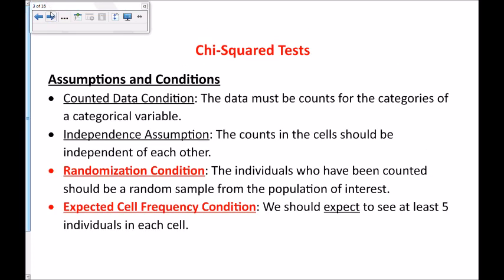Let's talk about some assumptions and conditions for chi-squared tests. These apply to the goodness-of-fit test as well as the other chi-squared tests. There are four of them, but two are really important. You should have counted data — data in counts — and the counts should be independent of each other. The two that you must explicitly test and write down are the randomization condition: the individuals counted should be a random sample from the population of interest.